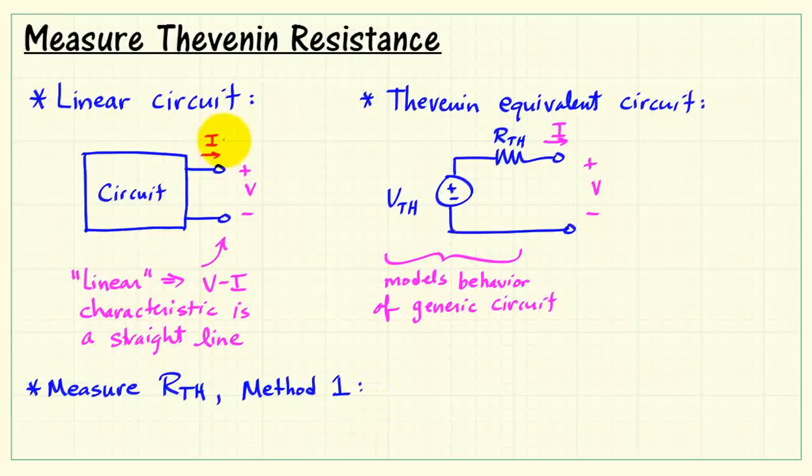Here's the first method to measure the Thevenin resistance. We begin by setting the current equal to zero, and we can do this by connecting an open circuit or simply leave the circuit disconnected.